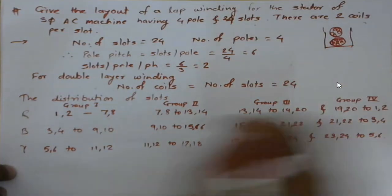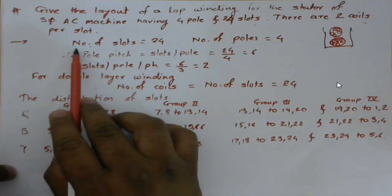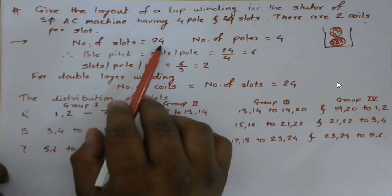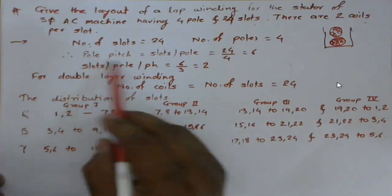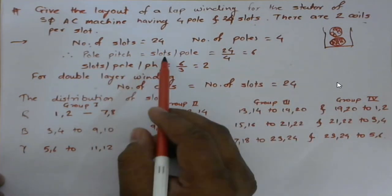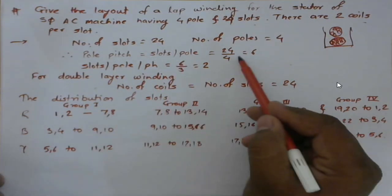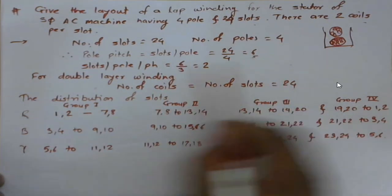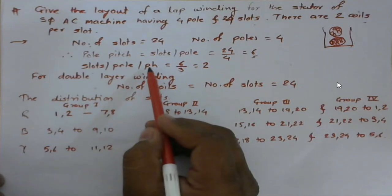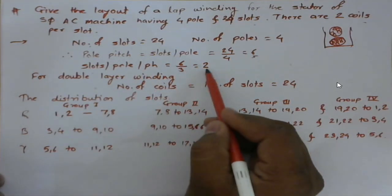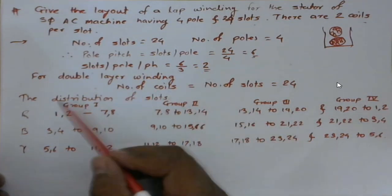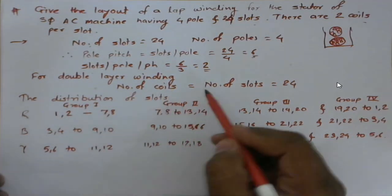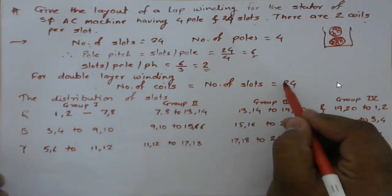In this case, the number of slots is 24 and the number of poles is 4. Therefore, the pole pitch, which is the slots per pole, is equal to 6 slots. The slots per pole per phase will be 6 divided by 3, which equals 2. In double layer winding, the number of coils equals the number of slots, which is 24 in our case.